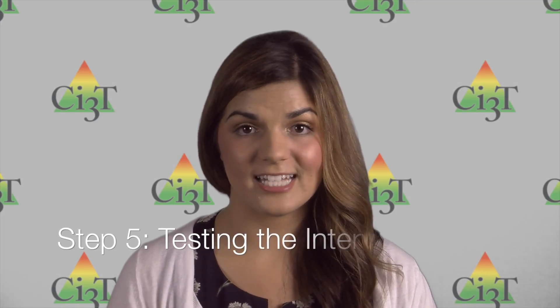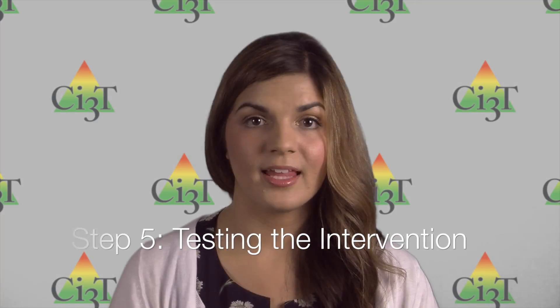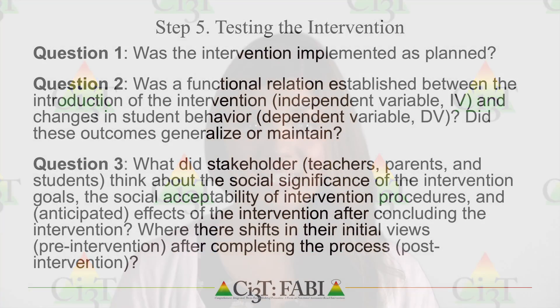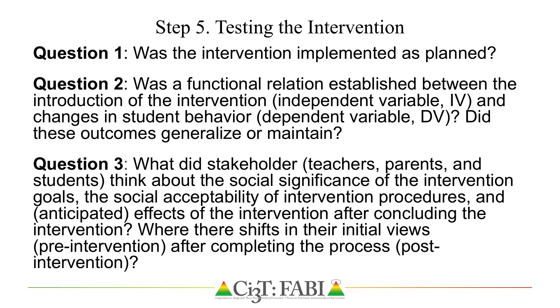This video introduces you to Step 5, testing the intervention. In Step 5, teams implement and evaluate the intervention using three essential indicators of trustworthiness to draw accurate conclusions regarding the intervention outcome. Teams are encouraged to ask and answer three questions: Was the intervention implemented as planned, which is looking at treatment integrity? Was the functional relation established between the introduction of the intervention and changes in student behavior, and did these outcomes generalize or maintain — were student outcomes monitored to determine a functional relation?